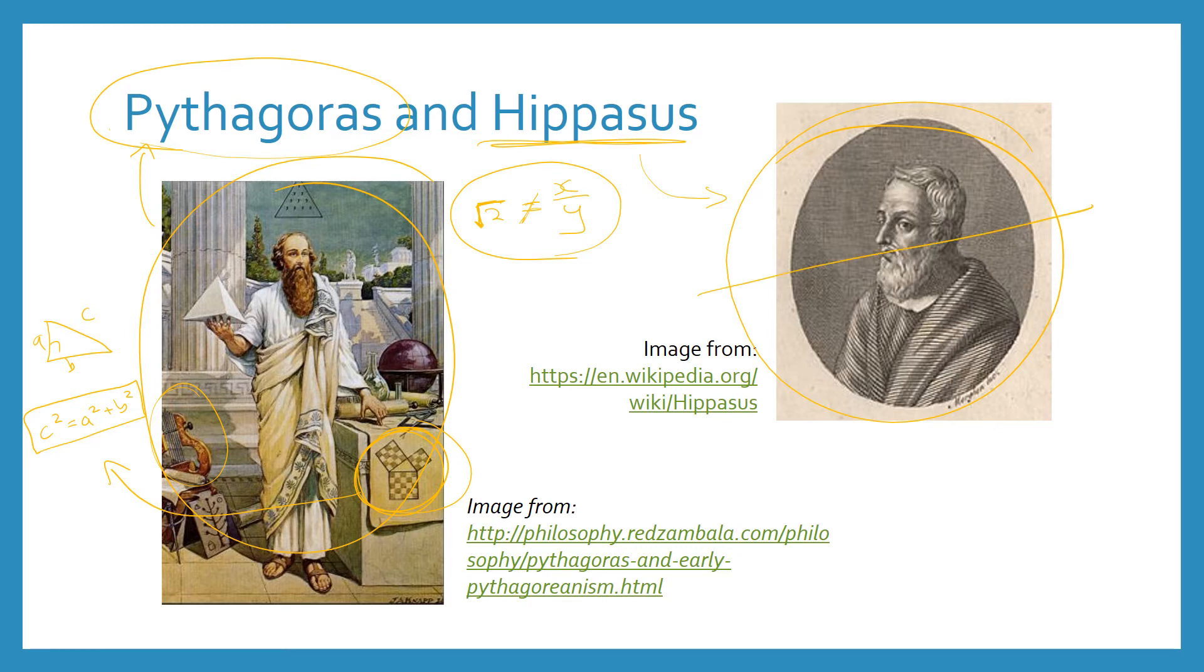There's different myths and legends about how this actually happened. Lots of people think that he was drowned at sea, others that he was just killed by Pythagoras' followers. But this idea of irrational and rational numbers is actually something that has a lot of historical significance, and was really important and a very contentious idea back in the day of Pythagoras.